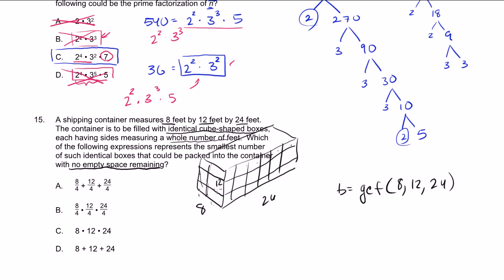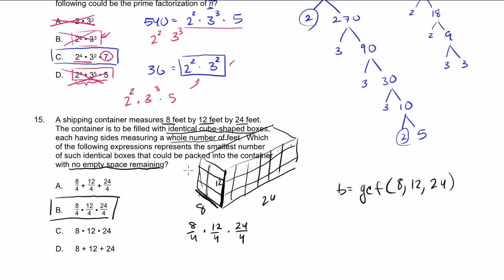So the total number of boxes is 8 divided by 4, times 12 divided by 4, times 24 divided by 4. This matches one of the answer choices. The key insight is that the box dimension must divide evenly into all three container dimensions, and to get the smallest number of boxes we want the greatest common factor, which is 4.